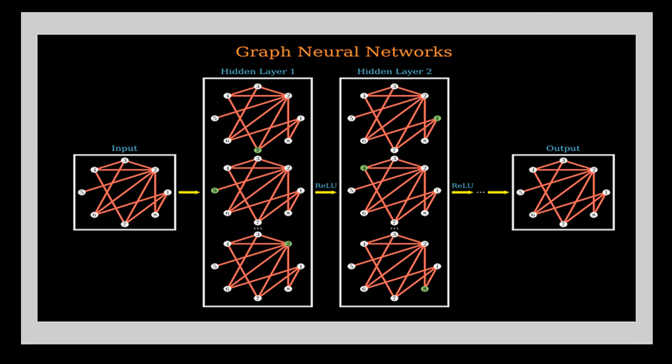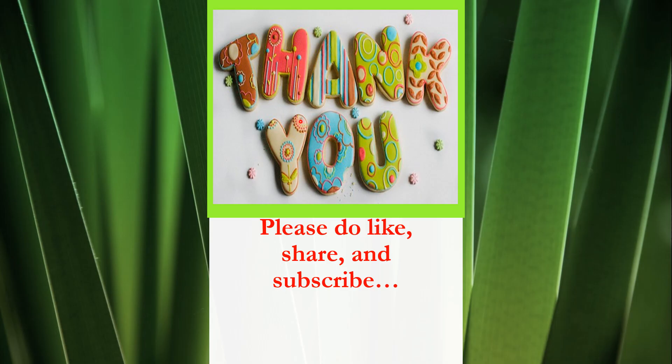You can use a graph neural network to learn the relations between the company and other companies in its industry based on their financial statements and other relevant features, and then use that information to make predictions about the company's stock price. In this example, the graph consists of nodes representing companies and edges connecting them based on their relationships. GNNs learn patterns in data by iteratively updating node representations based on information from neighboring nodes, which allows them to make accurate predictions about a company's stock price based on the relations between them. Thank you.